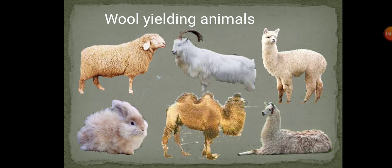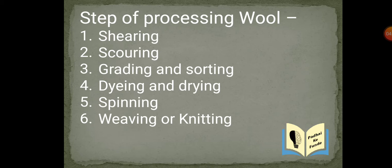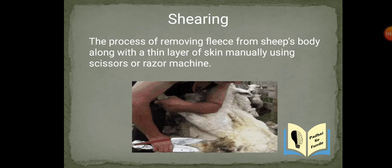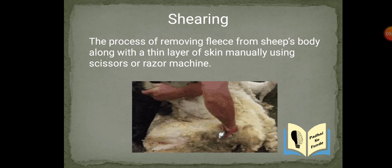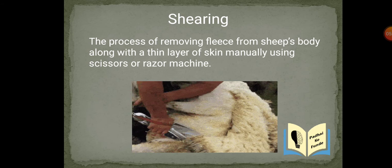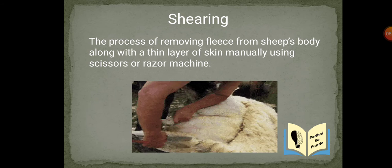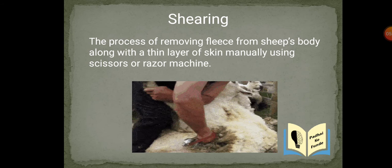Now let us discuss the procedure to obtain woolen fabric from wool fibers. The processing of wool involves six steps: shearing, scouring, grading and sorting, dyeing and drying, spinning, and finally weaving or knitting. In order to get woolen fabric, the animals are first sheared — that is, their hairs are removed. The process of removing fleece from the sheep's body along with a thin layer of skin is known as shearing. It is done manually using scissors or a razor machine.